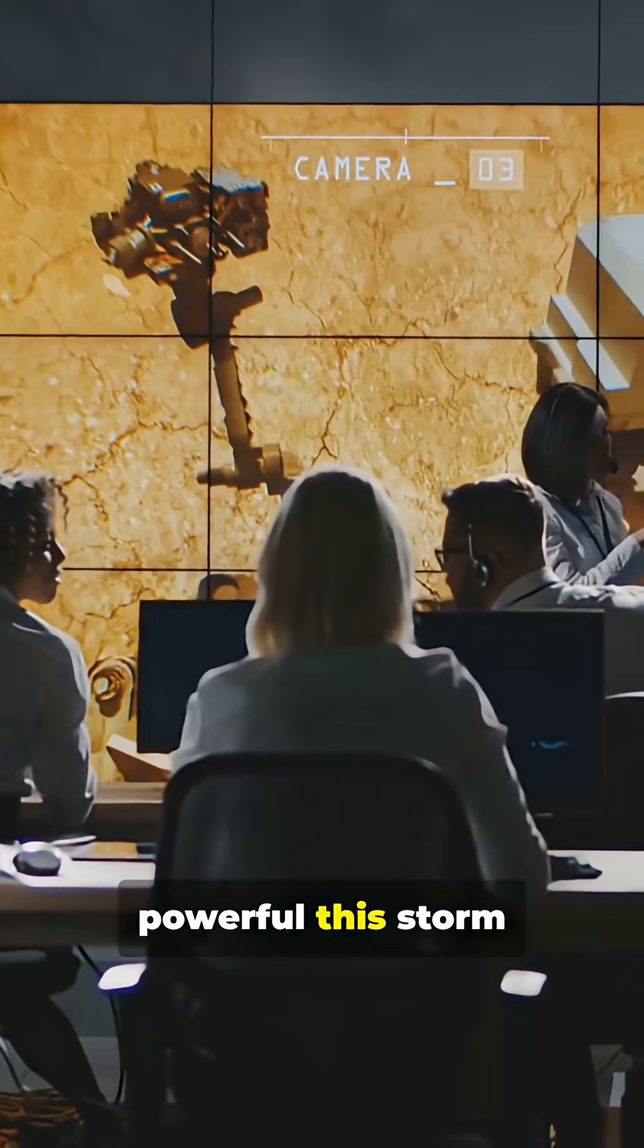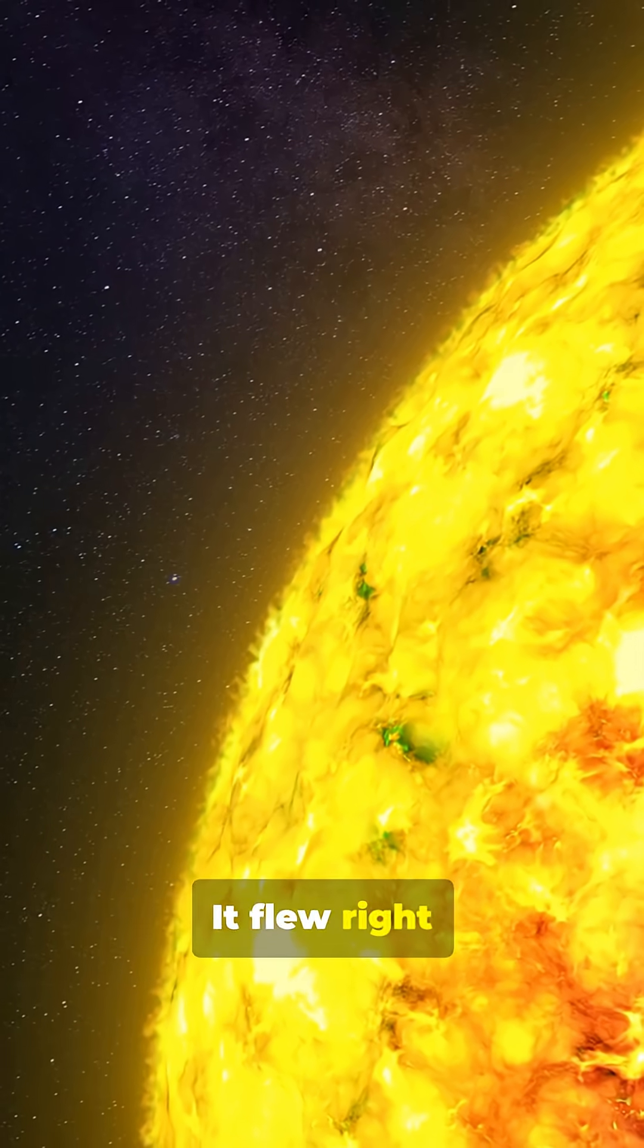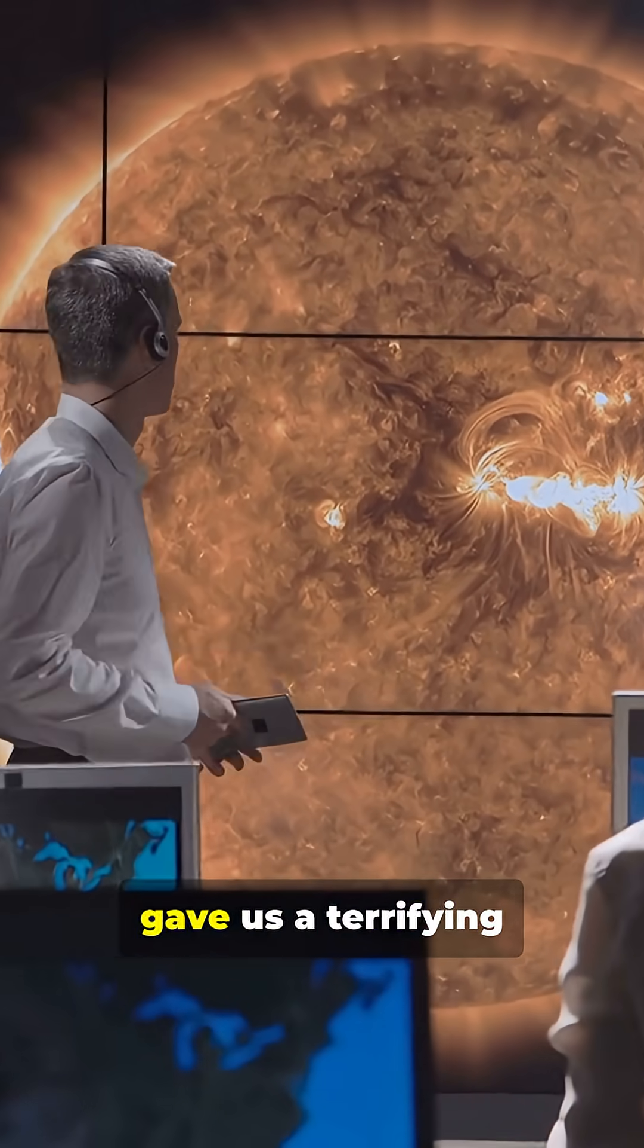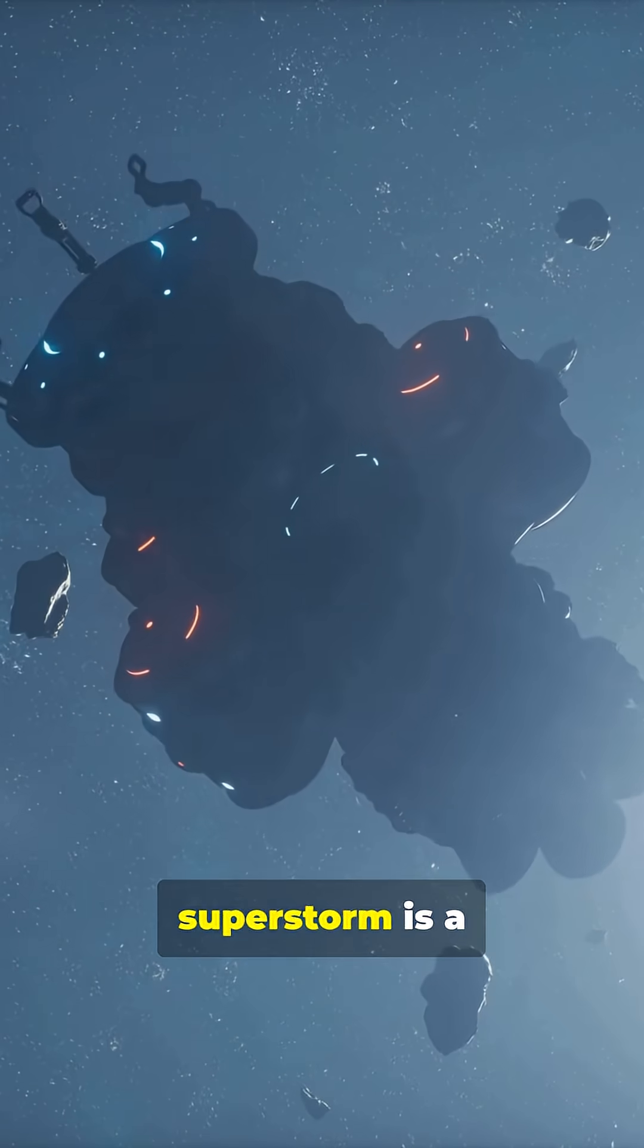We know how powerful this storm was because we had an eyewitness, NASA's Stereo-A spacecraft. It flew right through the storm's path, and its data gave us a terrifying look at the bullet we dodged.